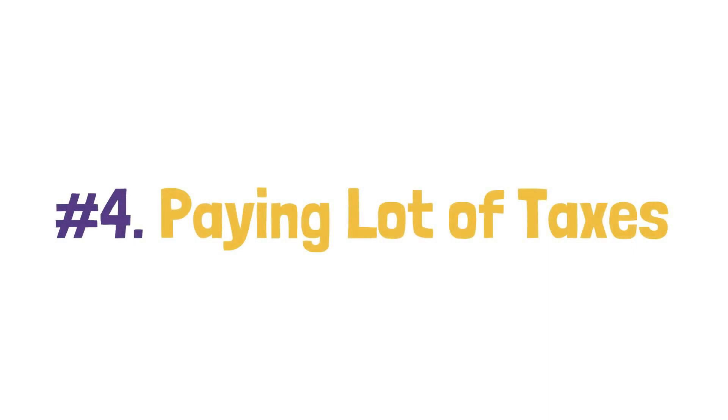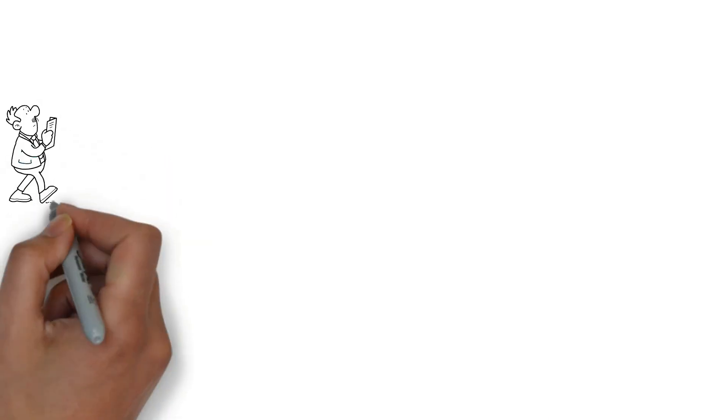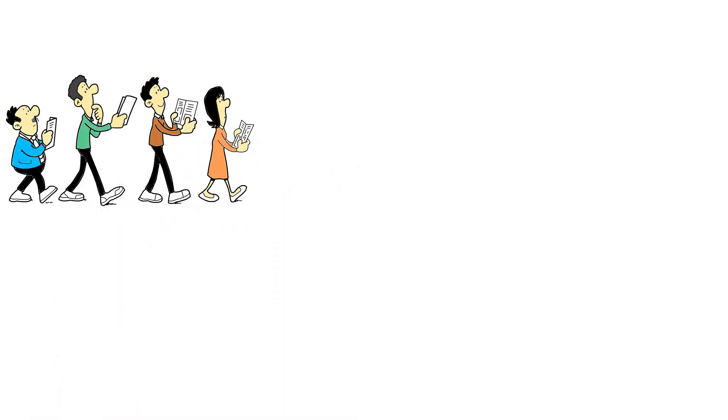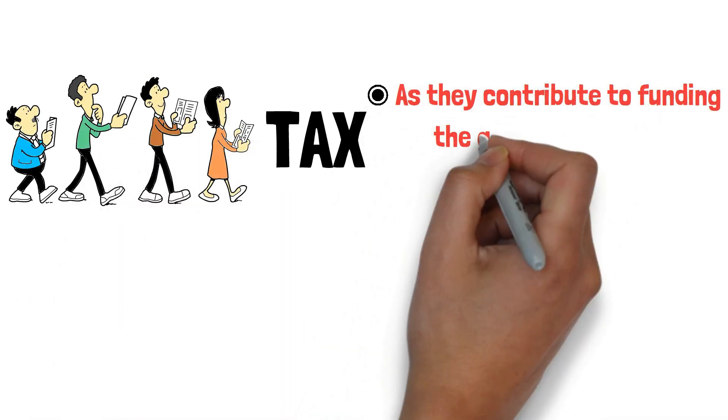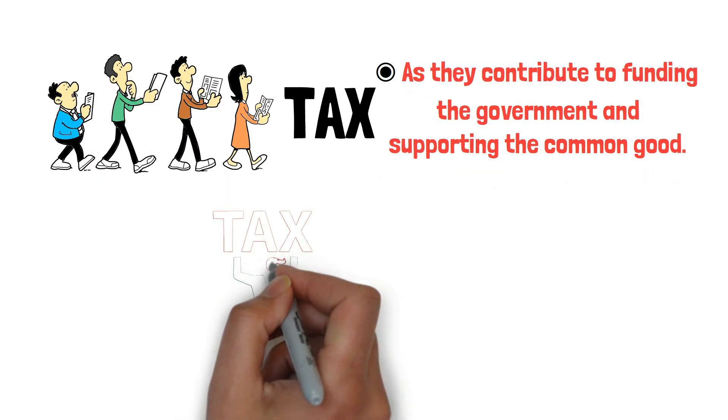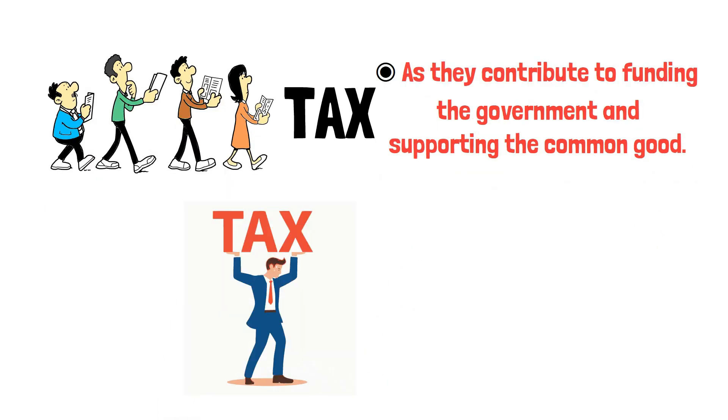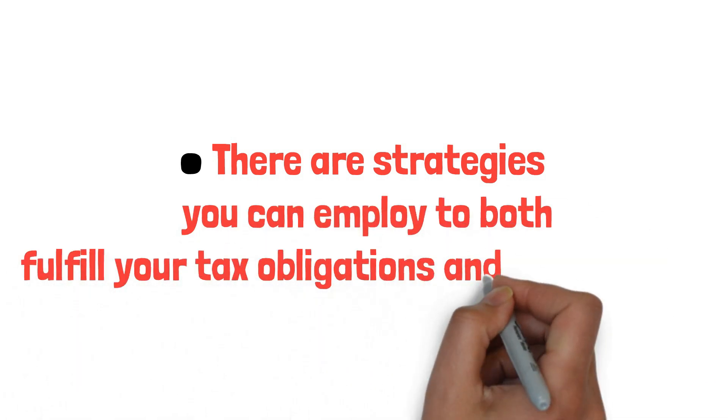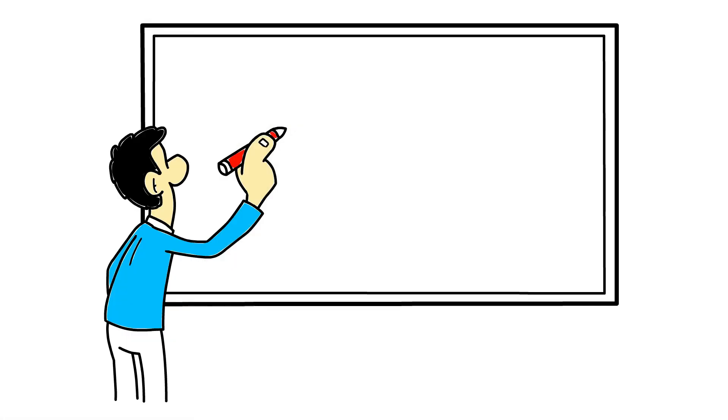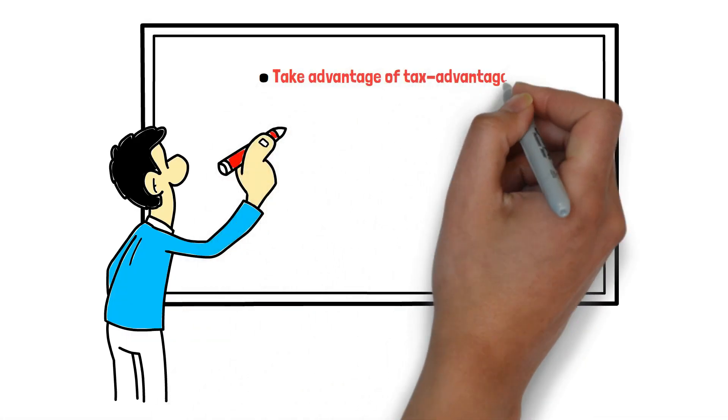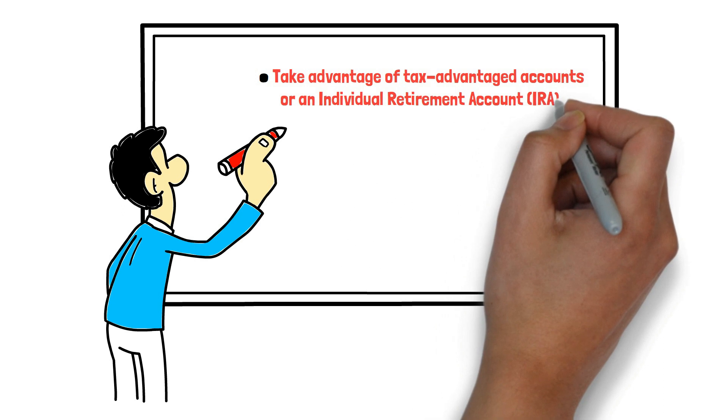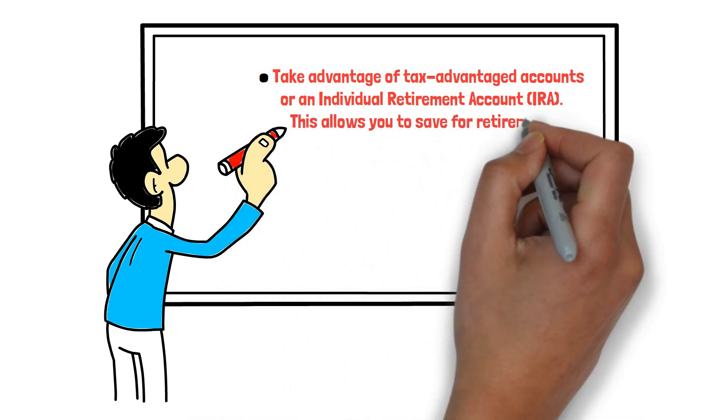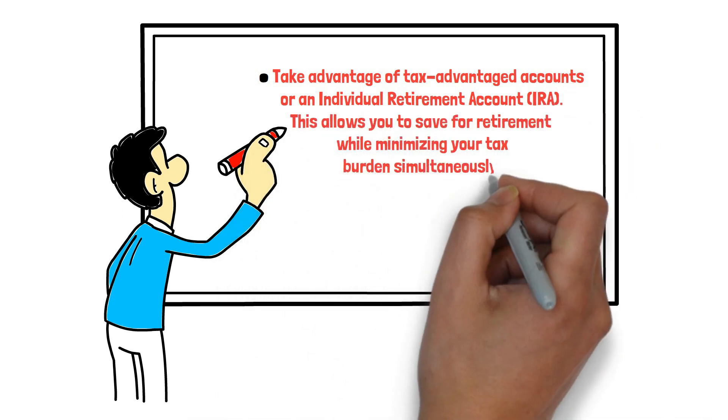Number 4: Paying a lot of taxes. Paying taxes is an integral part of participating in society, as they contribute to funding the government and supporting the common good. However, the burden of high taxes can sometimes be overwhelming. While attempting to avoid paying taxes is generally not feasible or advisable, there are strategies you can employ to both fulfill your tax obligations and save money. One effective approach is to take advantage of tax-advantaged accounts, or an Individual Retirement Account, or IRA. This allows you to save for retirement while minimizing your tax burden simultaneously.